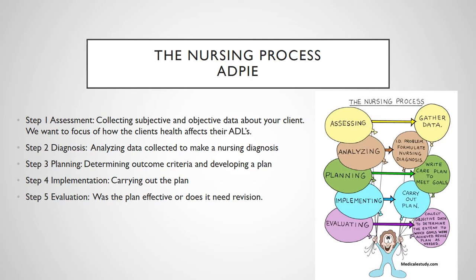Step four is implementation — this is carrying out the plan, physically giving the pain medicine, teaching the patient, whatever our plan was. Step five is evaluation: Was our plan effective? Did it work? Do we need any revisions? Was it an achievable or realistic goal for this particular client? That's what we do with our evaluation step.